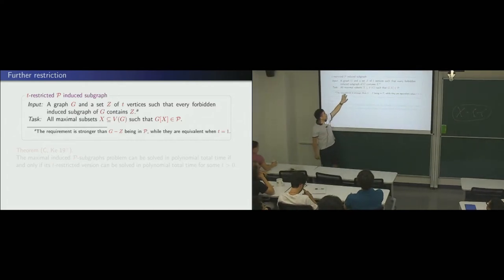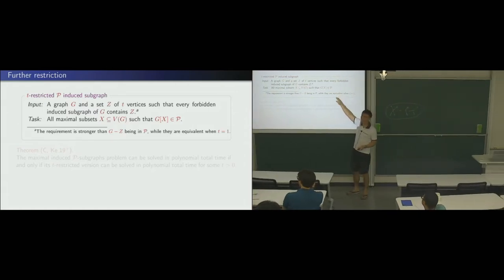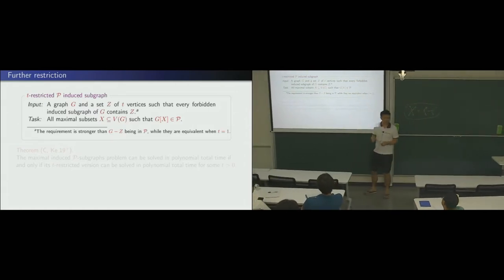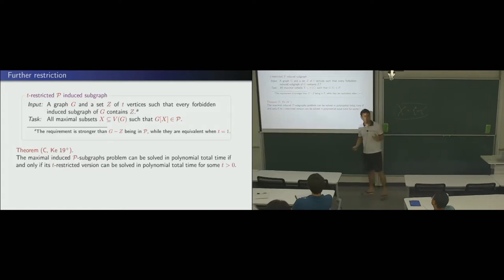What we want to say, the requirement is, every forbidden graph of G contains Z. You know, this implies that G minus Z is in P. Alright? But, this is far stronger. And, the equation is when T equals 1. Alright? But, in general, that's different. And, our requirement is far stronger. And, exactly this condition gives us the following result. So, if the problem can be solved in polytotal, if and only if for some T, for some constant T, the problem can be solved in polytotal. Okay?